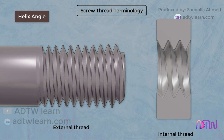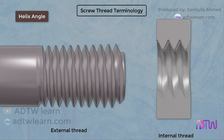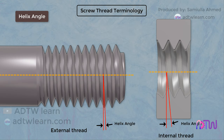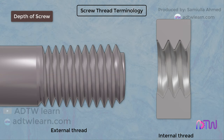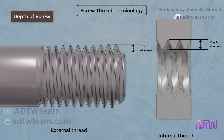Helix Angle: the helix angle is the angle between the helix of the thread and a line normal to the axis of rotation. Depth of Screw: the distance between the crest and the root of the thread, measured normal to the axis.